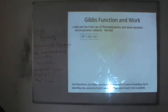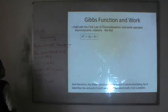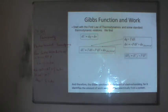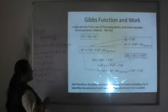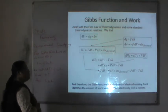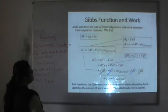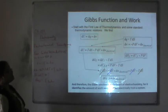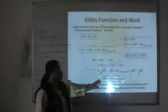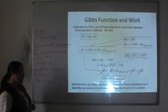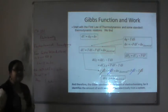Starting from the first law of thermodynamics: dG = dE + W, and dG = TdS. The work term dW = −PdV + dW_electrical. We get dE = TdS − PdV + dW_electrical. Finally, at constant T and P, dG = dW_electrical. This is the heart of electrochemistry: it identifies the maximum electrical work we can extract from a system.